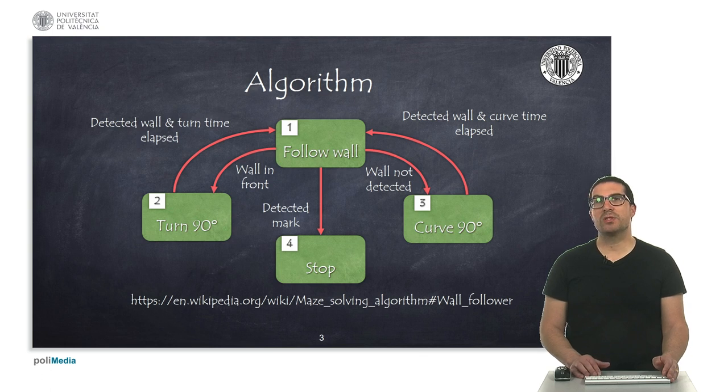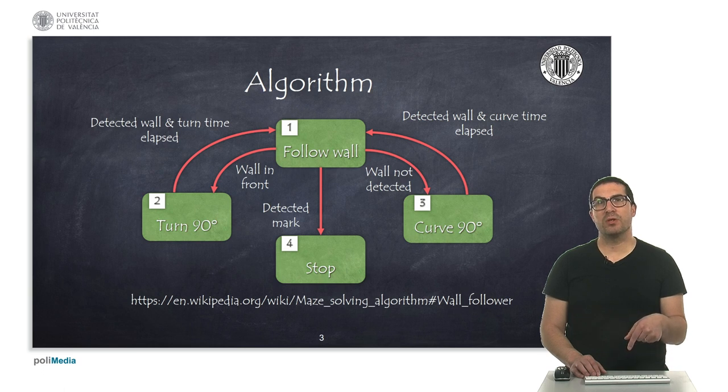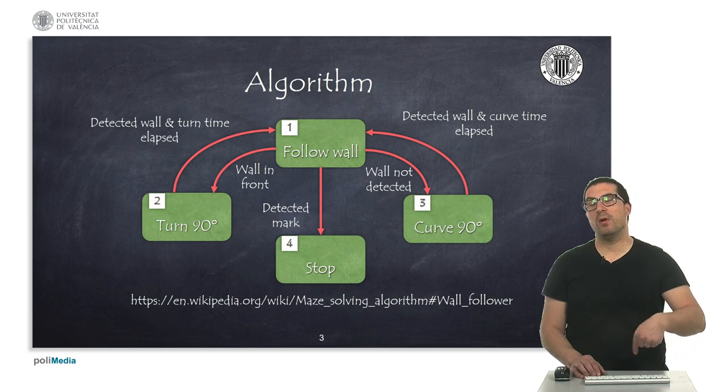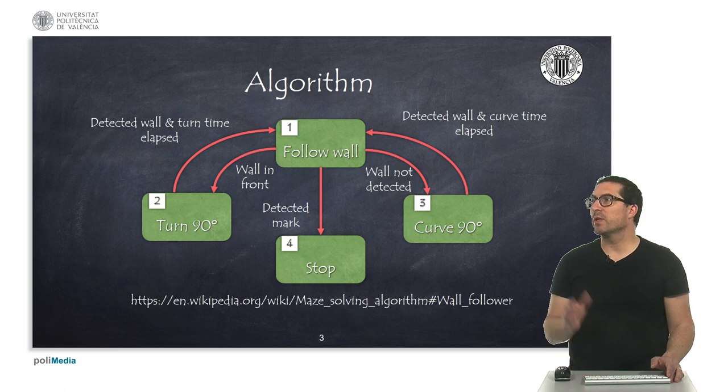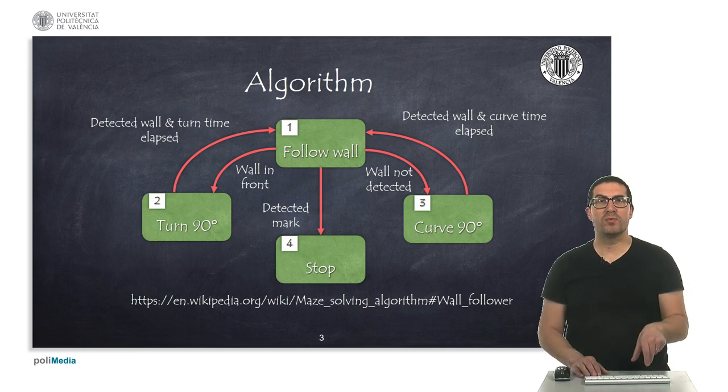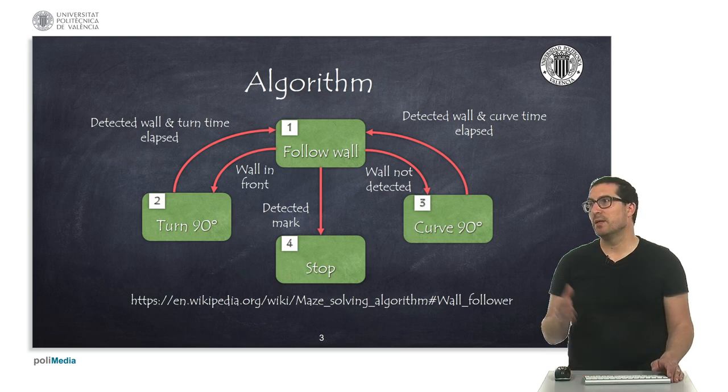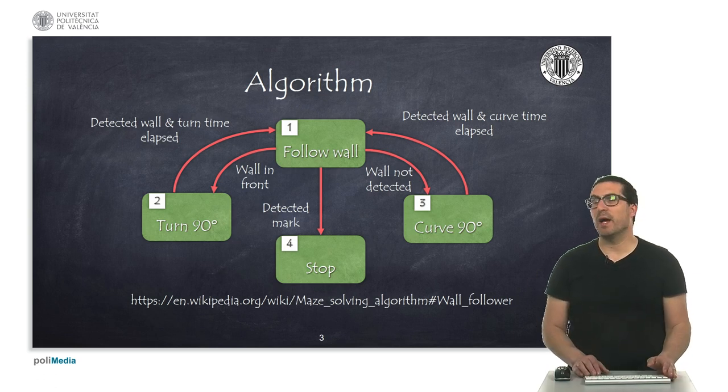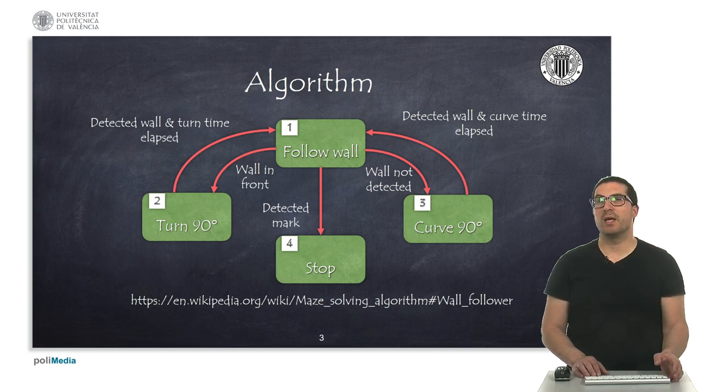If it happens that you stop detecting the wall, then in that situation, that means that you need to make a curve trying to follow the wall, trying to detect the wall again as soon as possible. This is what is indicated with the curve, in which the robot will rotate but at the same time move in order to move to a different cell. Finally, we can stop the algorithm by detecting a mark, usually lying on the ground, that is basically indicating that we have reached the exit of the maze.